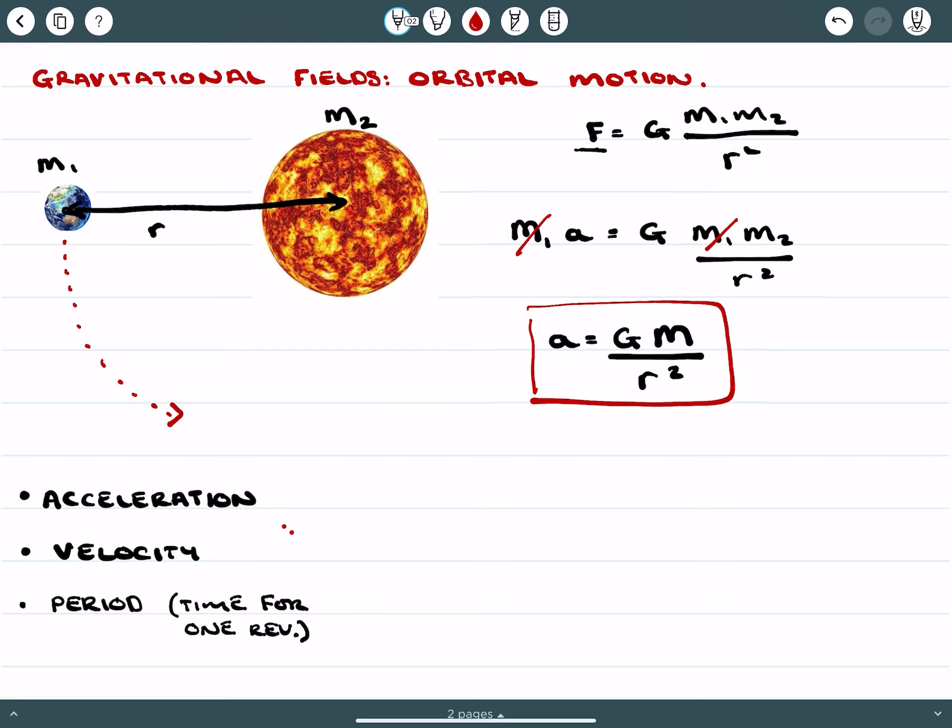Now when we're looking at velocity, we need to remember that acceleration equals v squared over r, that's taken from circular motion. And we can say here that GM over r squared is another way that we express acceleration. And what we're going to do is we're going to resolve this with r.